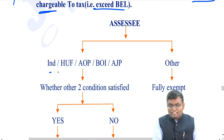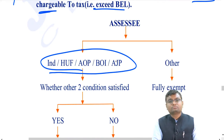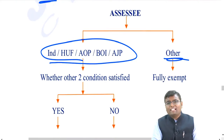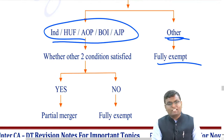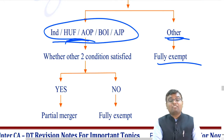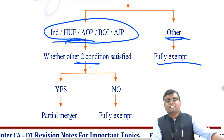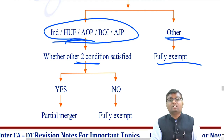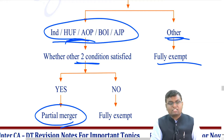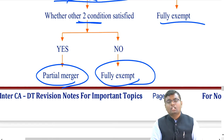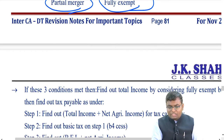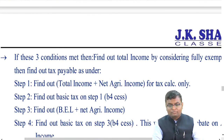First check whether the assessee is a slab-rate person. If no, then agricultural income is fully exempt and nothing special needs to be done. If yes, check whether the other two conditions are fulfilled — agricultural income more than ₹5,000 and total income more than the basic exemption limit. If yes, apply partial merger. If no, the income is fully exempt.